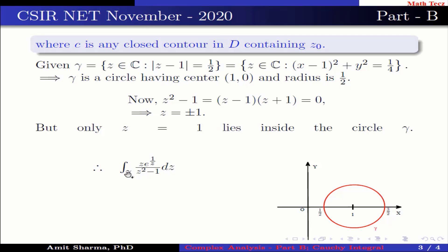Therefore, integration over gamma z into e raised to the power 1 by z divided by z square minus 1 dz, which is equal to z minus 1, which is equal to 2 pi iota divided by factorial 1, and the value of z into e raised to the power 1 by z over z plus 1 at z equal to 1.